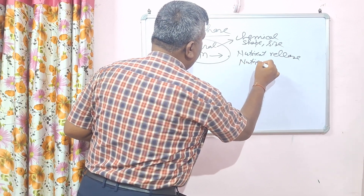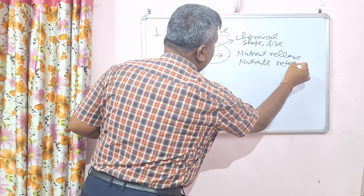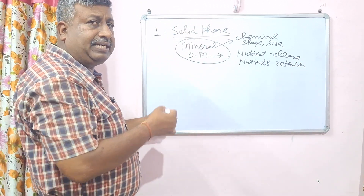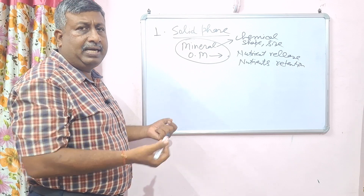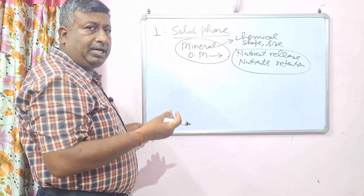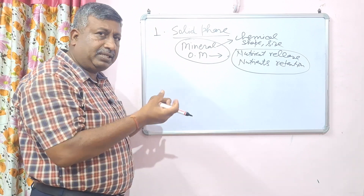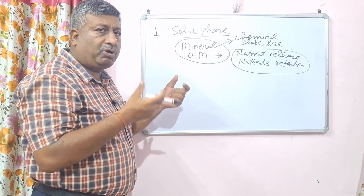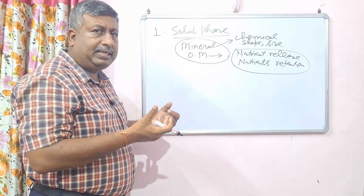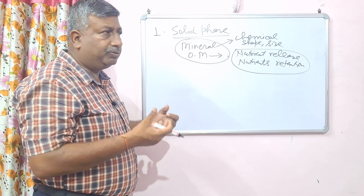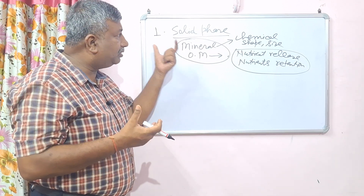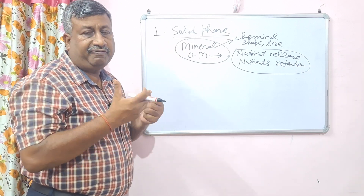Nutrient retention means these nutrients are held by this material through surface area, known as cation exchange capacity (CEC) or anion exchange capacity (AEC). The nutrients that are absorbed and retained are in the solid phase, and CEC or AEC determines how much nutrient is available.